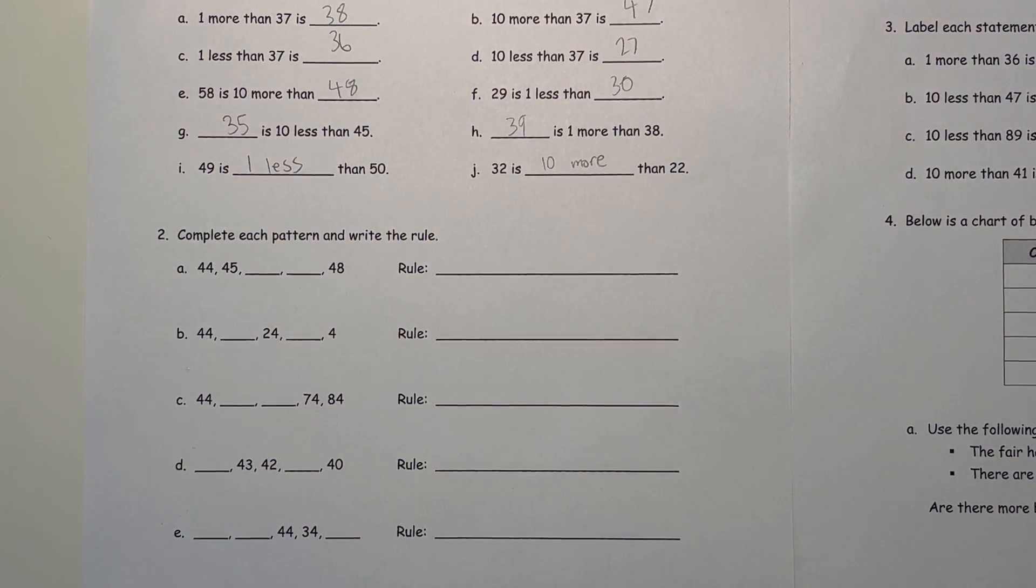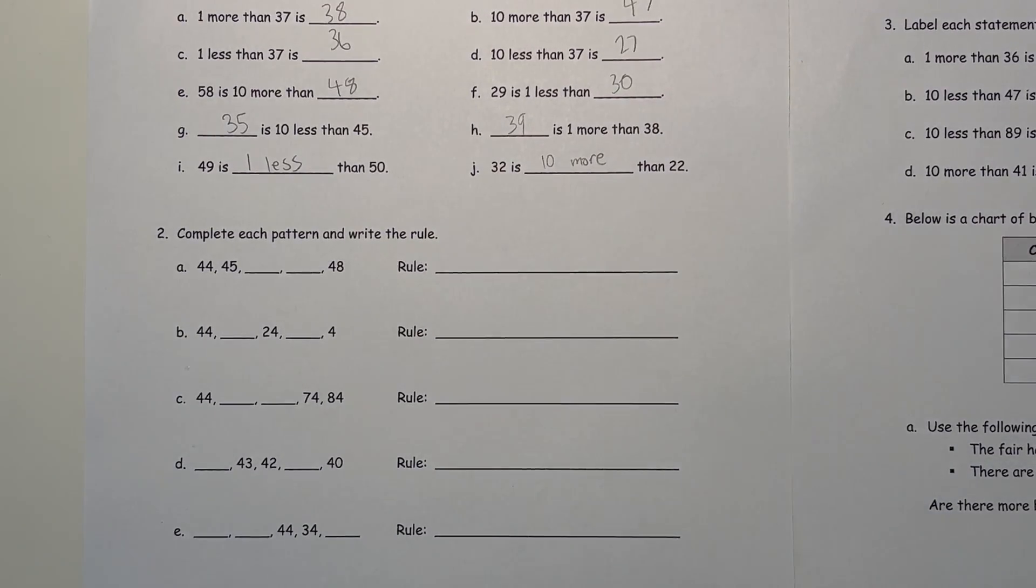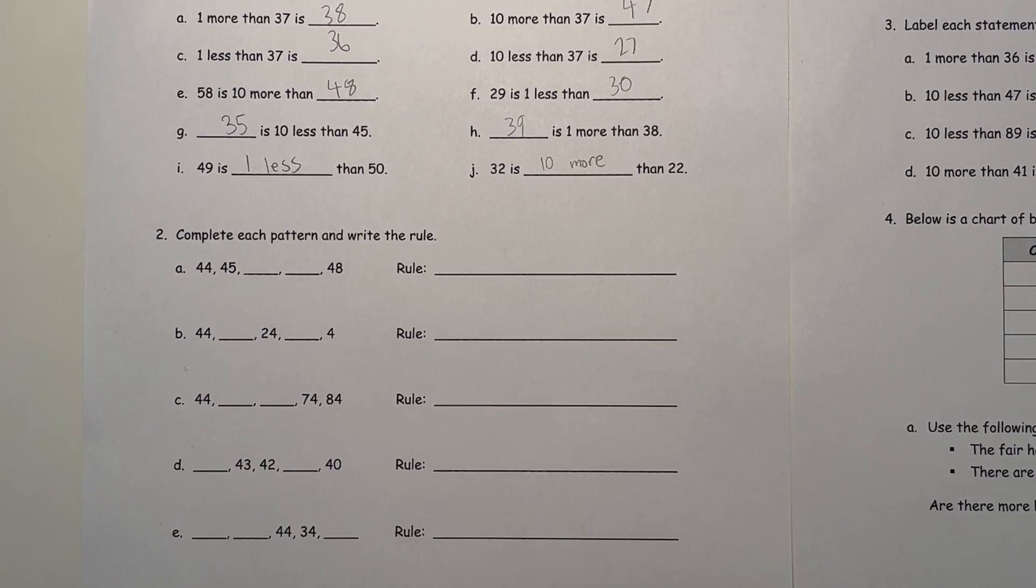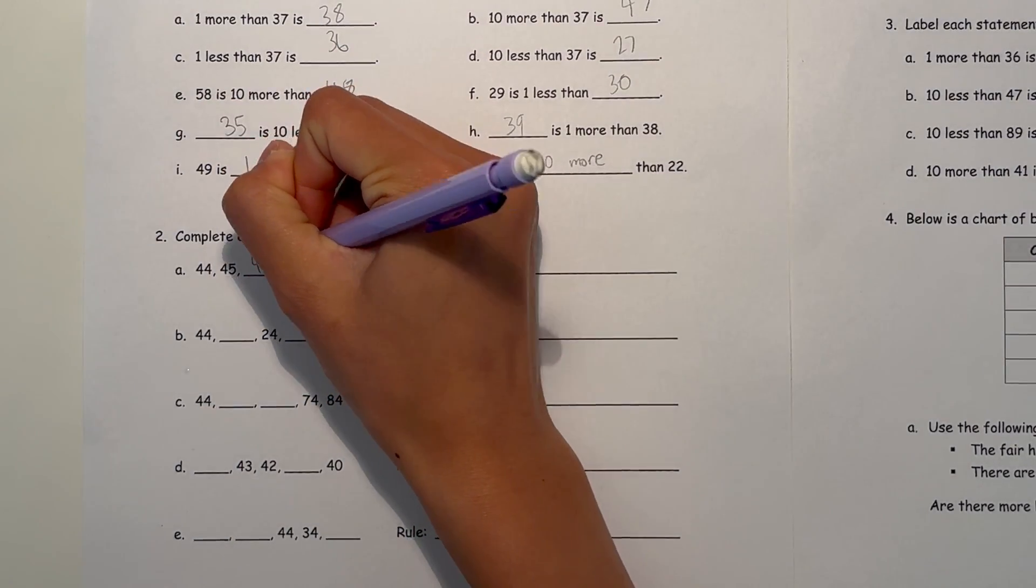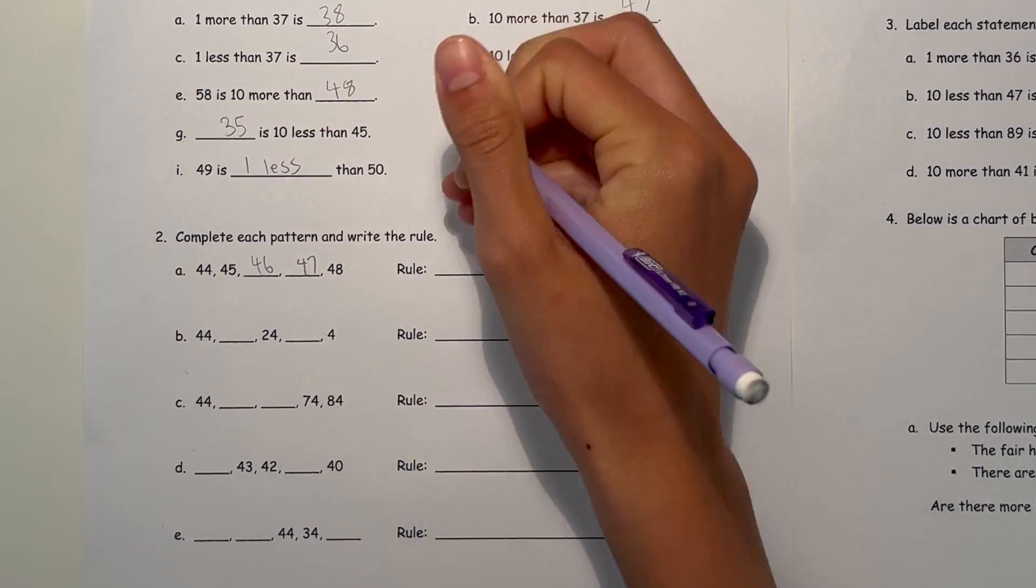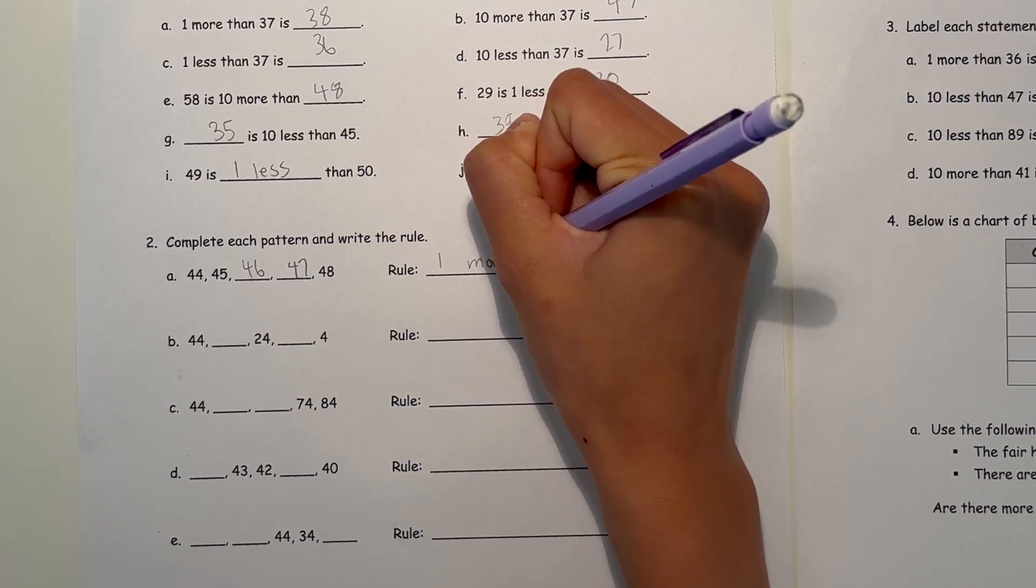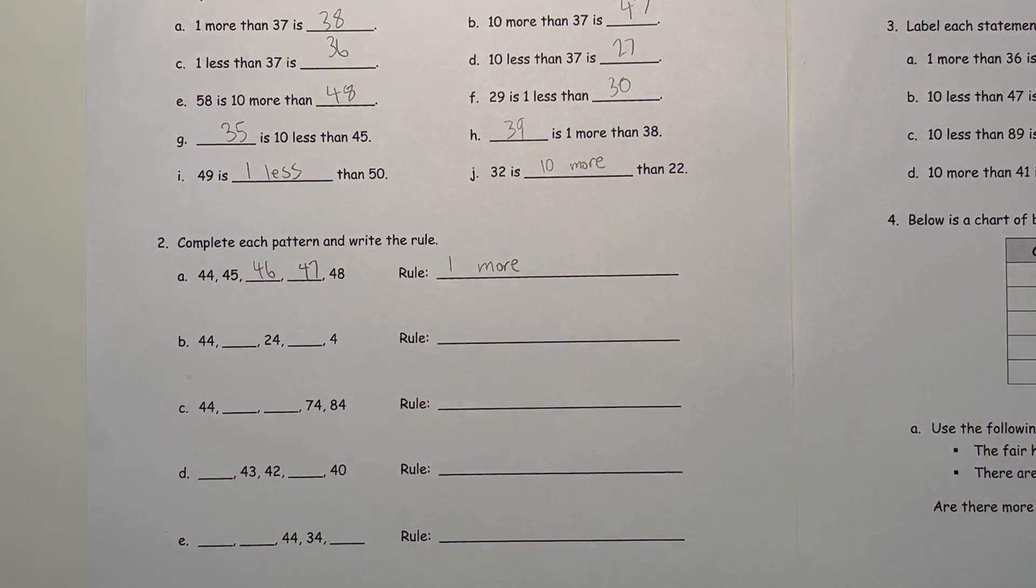Now number two, complete each pattern and write the rule. So here we see 44 and it went up by 1 to 45. So that means the pattern is going up by 1. So this is 46, 47, and then 48. So the rule is one more. Each time we go, we go one more.